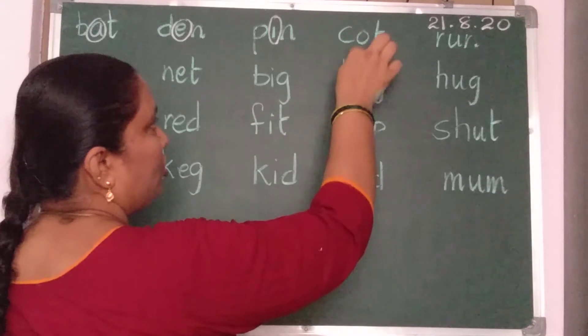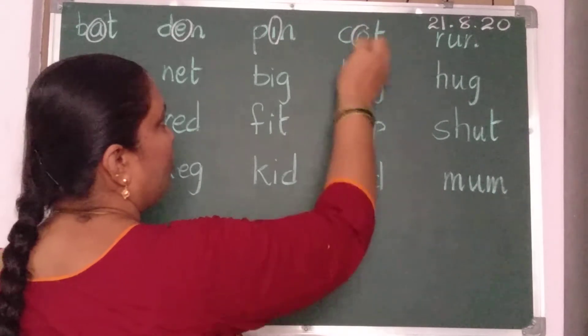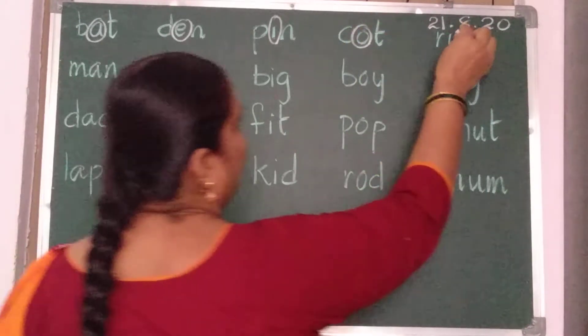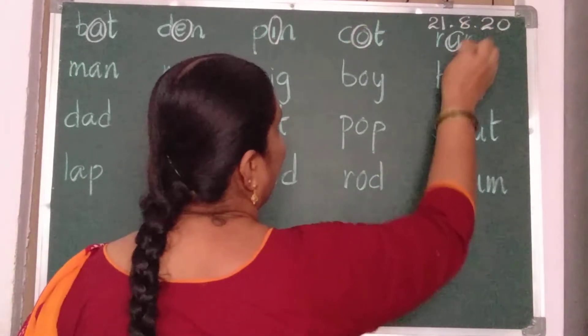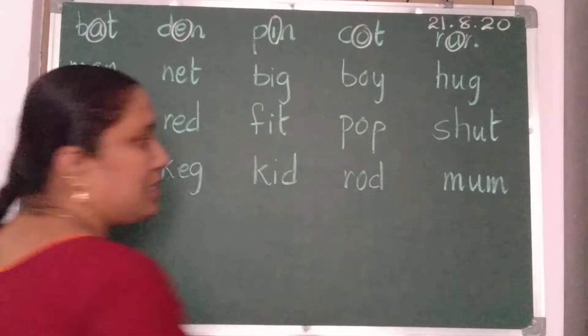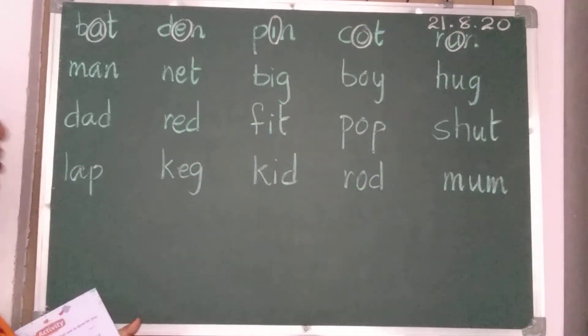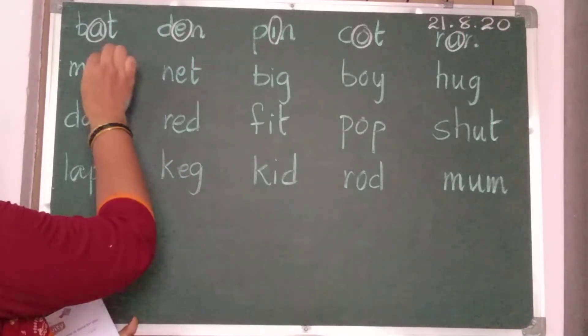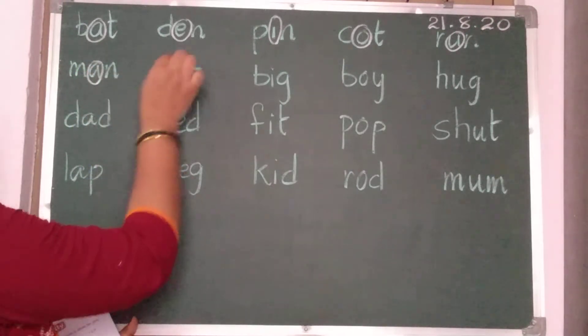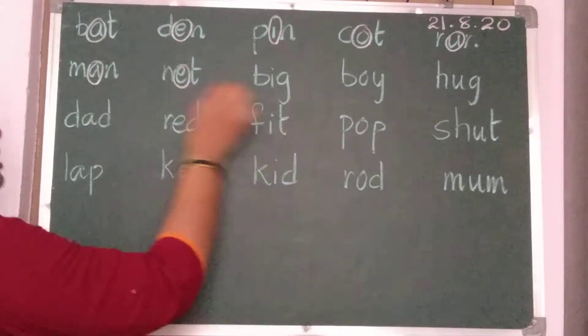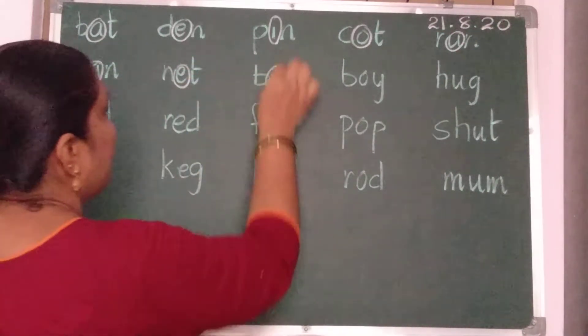C, O, T — cot. O is a vowel. R, U, N — run. U is a vowel. So you should circle only the vowel sounds.